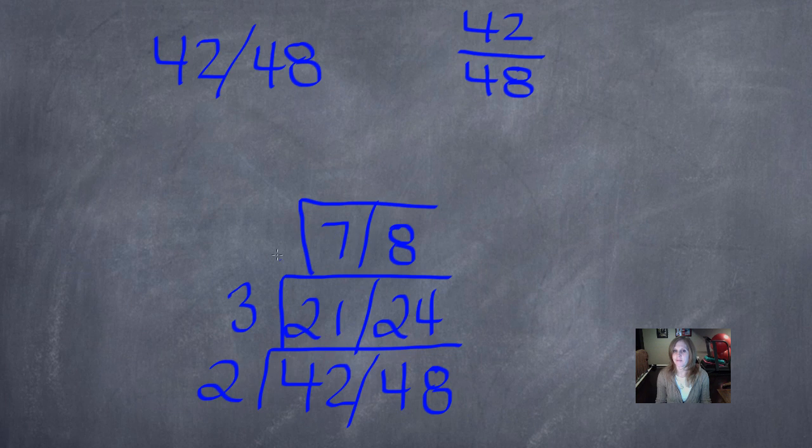Another layer. What will divide evenly into both 7 and 8? 1. 1 goes into 7, 7 times. 1 goes into 8, 8 times.